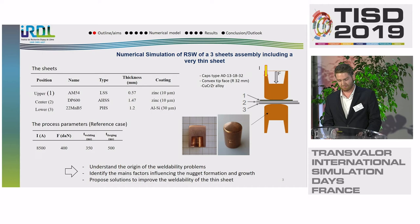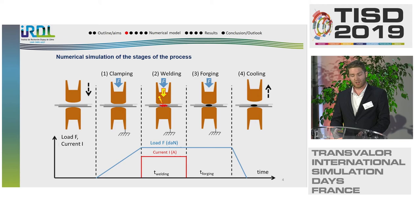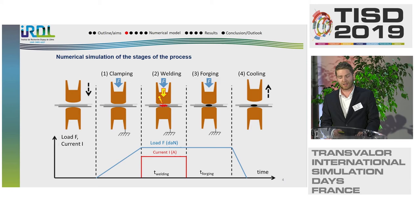The RSW process and the model are split into four different steps. First, the clamping, in which the load is applied. Second, the welding, where the load is maintained and the current applied. Third, the forging, where the current is shut down and the load is still maintained. And finally, the cooling with the separation of the electrode.